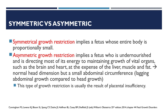Symmetrical growth restriction implies a fetus whose entire body is proportionally small. On the other hand, asymmetrical growth restriction implies a fetus who is undernourished and is directing most of its energy to maintaining growth of the vital organs — specifically the brain and the heart — at the expense of the liver, muscle, and fat. Therefore, you have a normal head dimension but a small abdominal circumference, meaning you have lagging abdominal growth compared to head growth. The result of diminished glucose transfer and hepatic storage would primarily affect cell size and not cell number, so fetal abdominal circumference, which reflects liver size, would be greatly reduced. This type of growth restriction is usually the result of placental insufficiency.